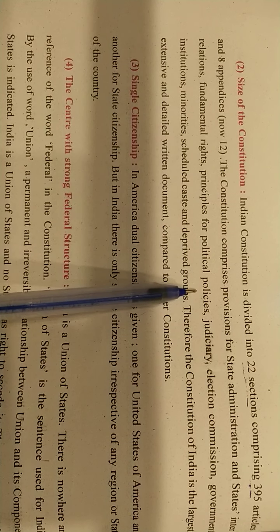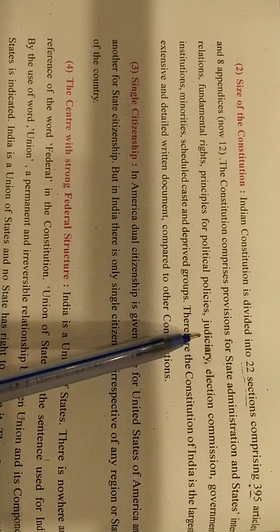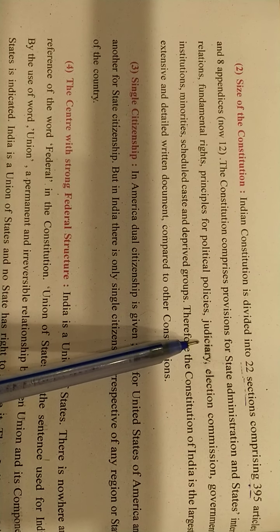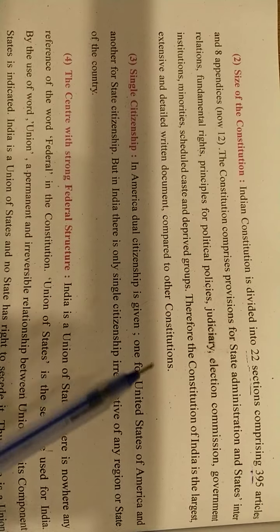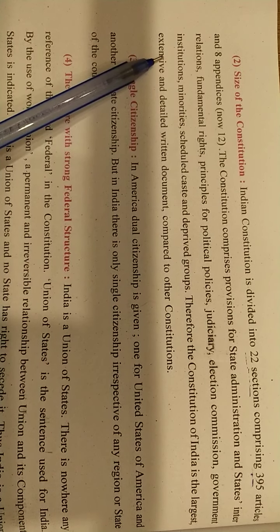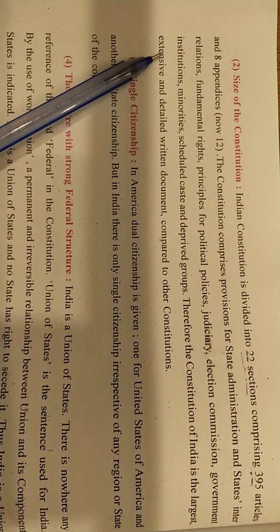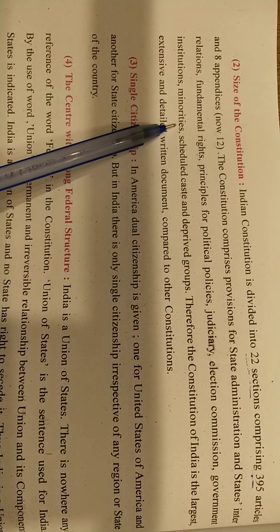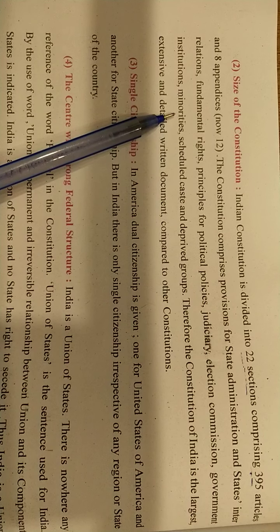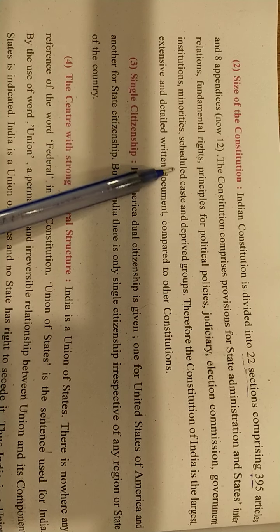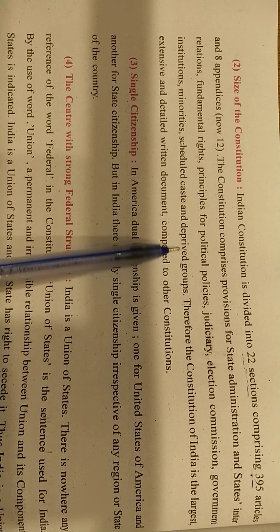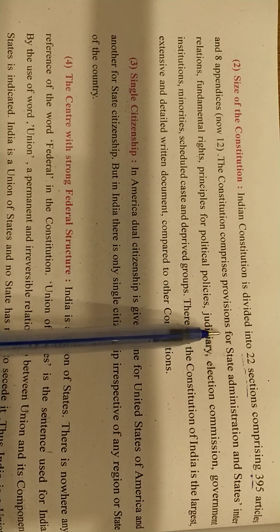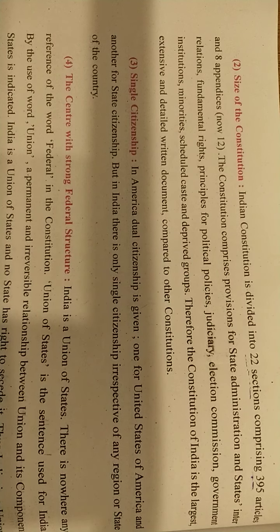The constitution covers principles for political policies, judiciary (courts and judges, how they are appointed), election commission (how elections are held), government institutions like schools, colleges, hospitals (how people work there), minorities like Muslims in India, and scheduled caste (SC) and deprived groups (ST — tribal people). All these have provisions and detailed written facilities.